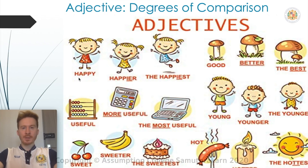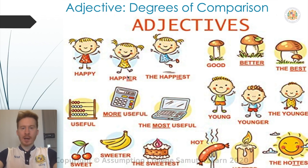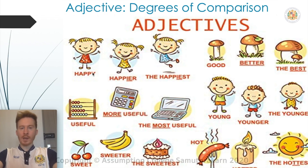Here are some more examples. 'This girl is happy. This girl is happier. And this girl is happiest.' Notice that happy has a Y at the end. When we have a Y at the end of an adjective, we drop the Y and add I, then add ER. So happy (H-A-P-P-Y) becomes happier (H-A-P-P-I-E-R). Same with happiest — we drop the Y and add I-E-S-T.